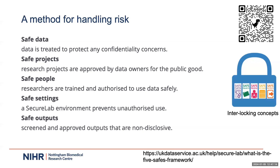The Five Safes framework covers safe data, projects, people, settings, and outputs. This concept has been around for quite some time but has started to come into mainstream use, particularly driven by Health Data Research UK and the Data Alliance. It's about understanding how we give access to researchers in a controlled way. Most importantly, these concepts are interlocking — it's a safe person in the context of a safe project, for safe data, in a safe setting, with safe outputs. You can't just take one on its own.